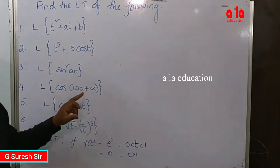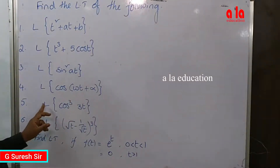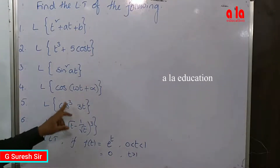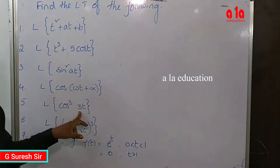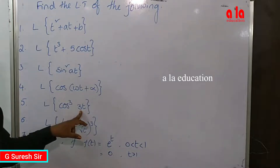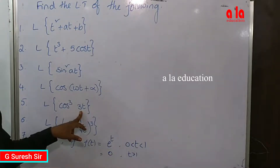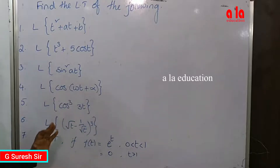For Laplace transform of cosine cubed, use the cosine cube formula: one quarter into three cosine theta plus cosine 3 theta. The formula is one quarter times three cos theta plus cos 3 theta. Use this formula to simplify and then apply the Laplace transform.